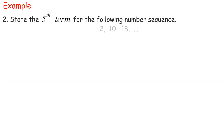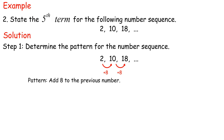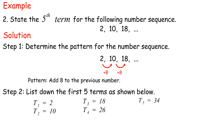Example 2: State the fifth term for the following number sequence. Solution. Step 1: Determine the pattern for the number sequence. The pattern is add 8 to the previous number. Step 2: List down the first five terms: t1 is 2, t2 is 10, t3 is 18, t4 is 26, and t5 is 34. Hence, the fifth term is 34.